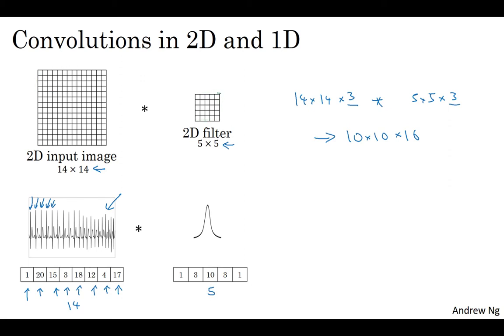With 2D data, what the convolution allows you to do is take the same 5 by 5 feature detector and apply it at lots of different positions throughout the image, and that's how you wound up with your 10 by 10 output. What a 1D filter allows you to do is take your 5 dimensional filter and similarly apply that at lots of different positions throughout this 1D signal. If you apply this convolution, what you find is that a 14 dimensional thing convolved with this 5 dimensional thing will give you a 10 dimensional output.